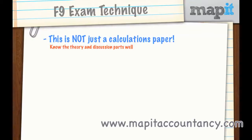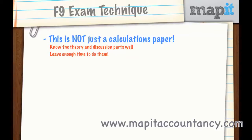Often we'll find that students are very good at the calculations but they just don't know what it means. So we need to focus on what these calculations that we're doing actually mean and what the implications are for the business in the question. The other thing is that we need to leave enough time to do those discussion parts. We need to manage our time really well in the F9 paper, because often it takes a little bit more time to do the calculations than you expected, and then you don't have time to do the discussion parts.